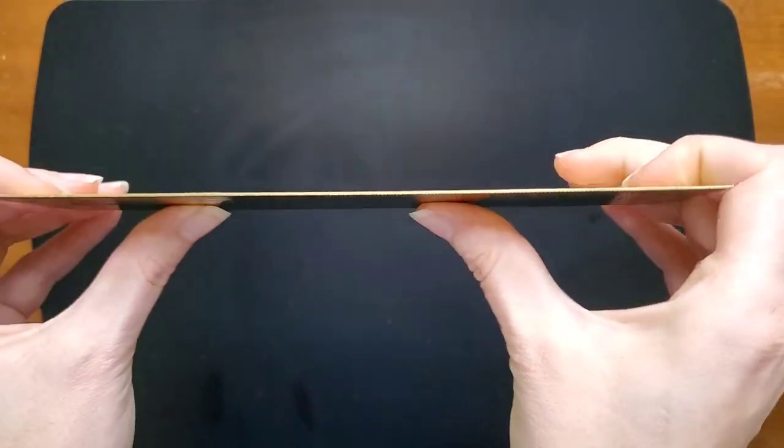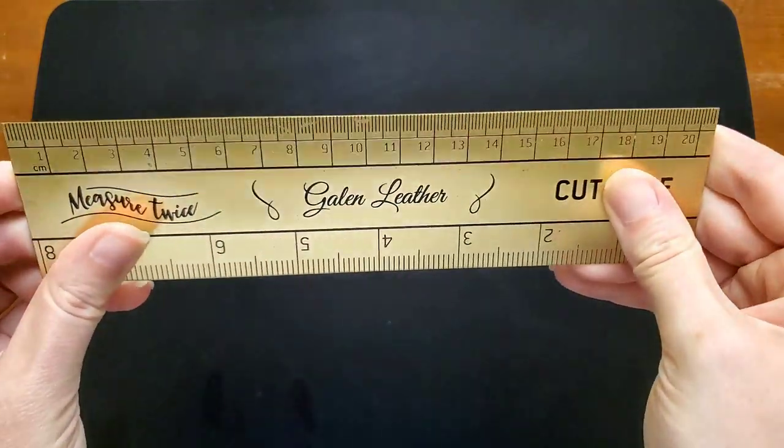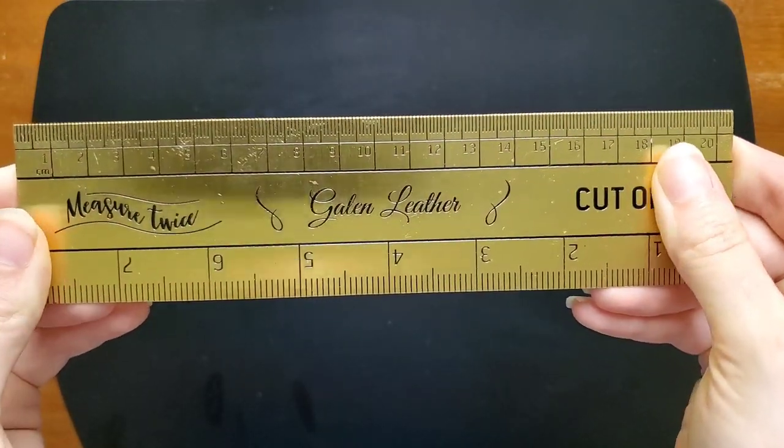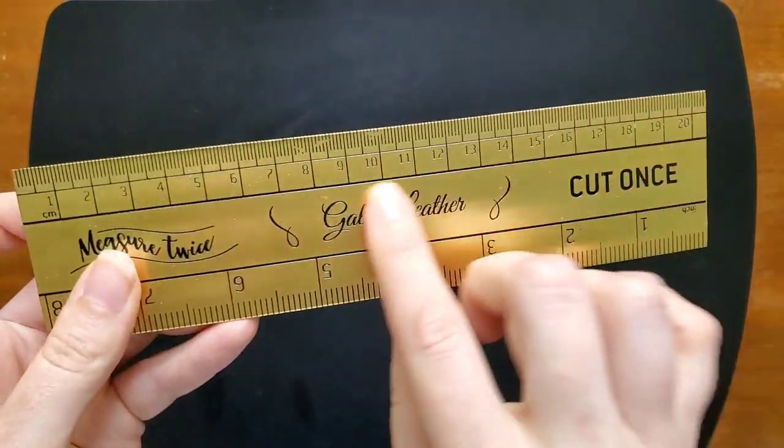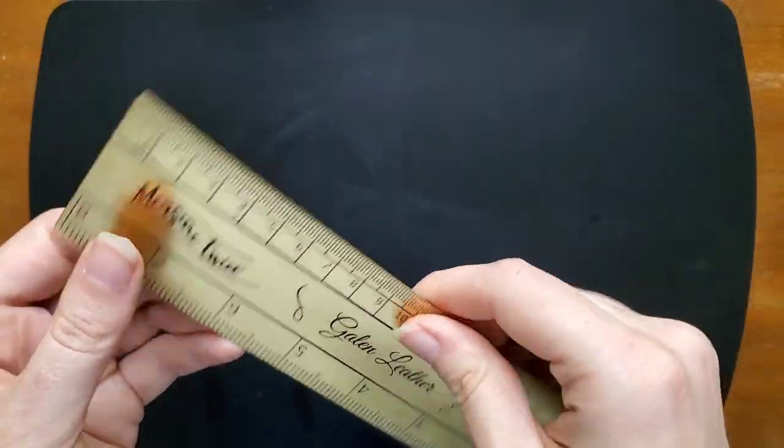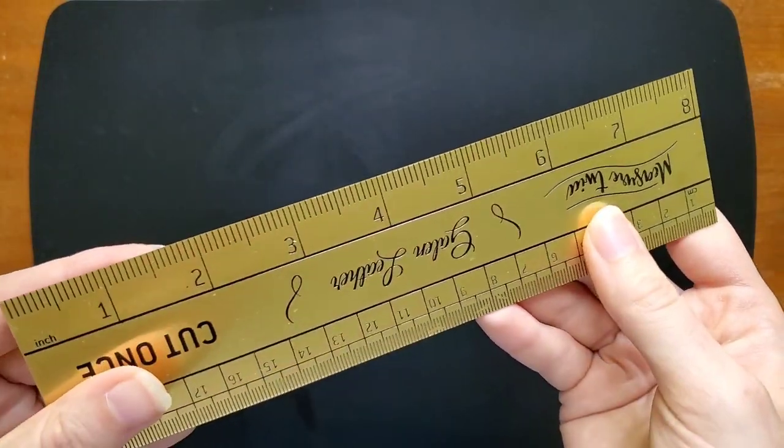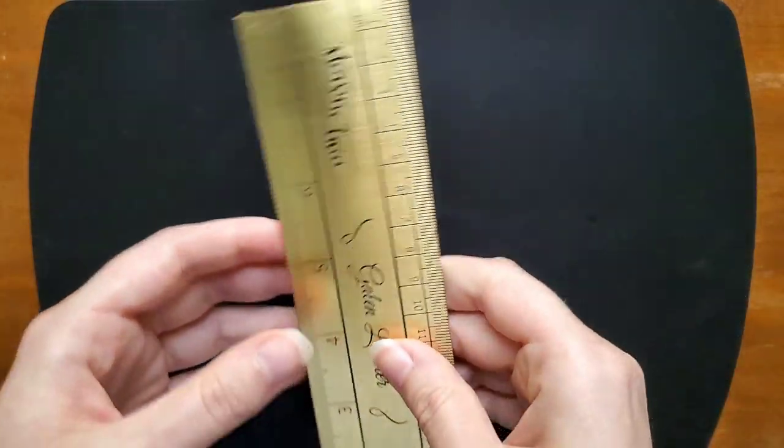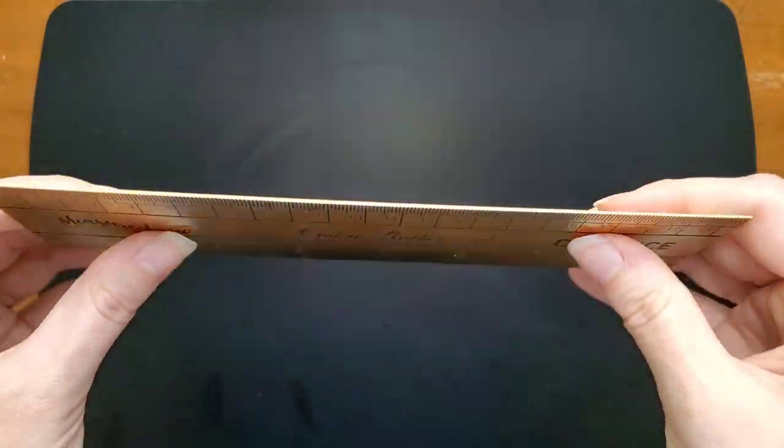So this is essentially a sheet of brass that has been stamped and printed with numerical measurements. We have centimeters on one side and inches on the other, and I've had this ruler for a few years now and have very much enjoyed it.